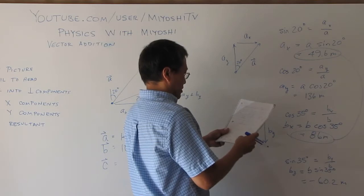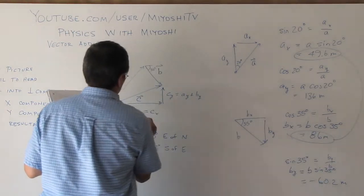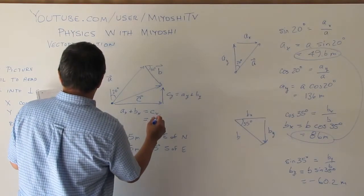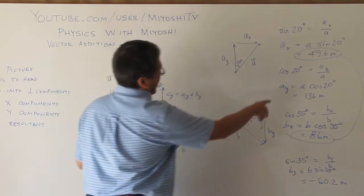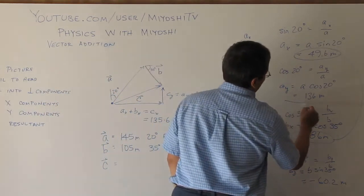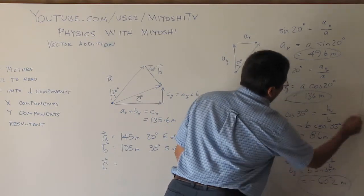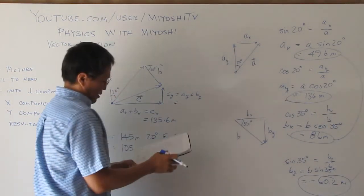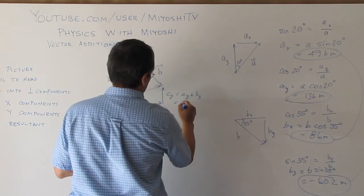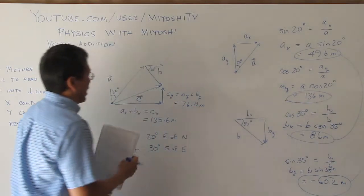So this is 135.6 meters. Add my by and ay. And when we add a negative number, we are subtracting. So these guys end up being 76.0 meters in the y direction.